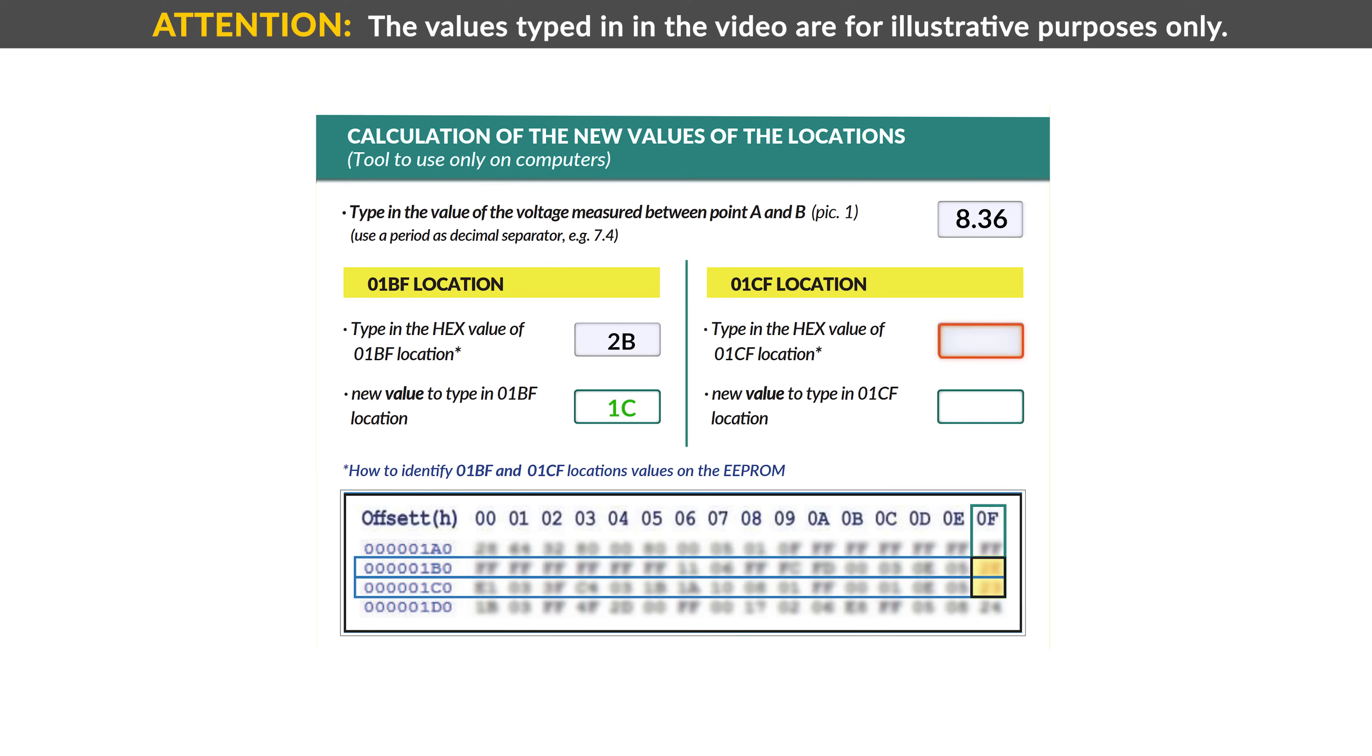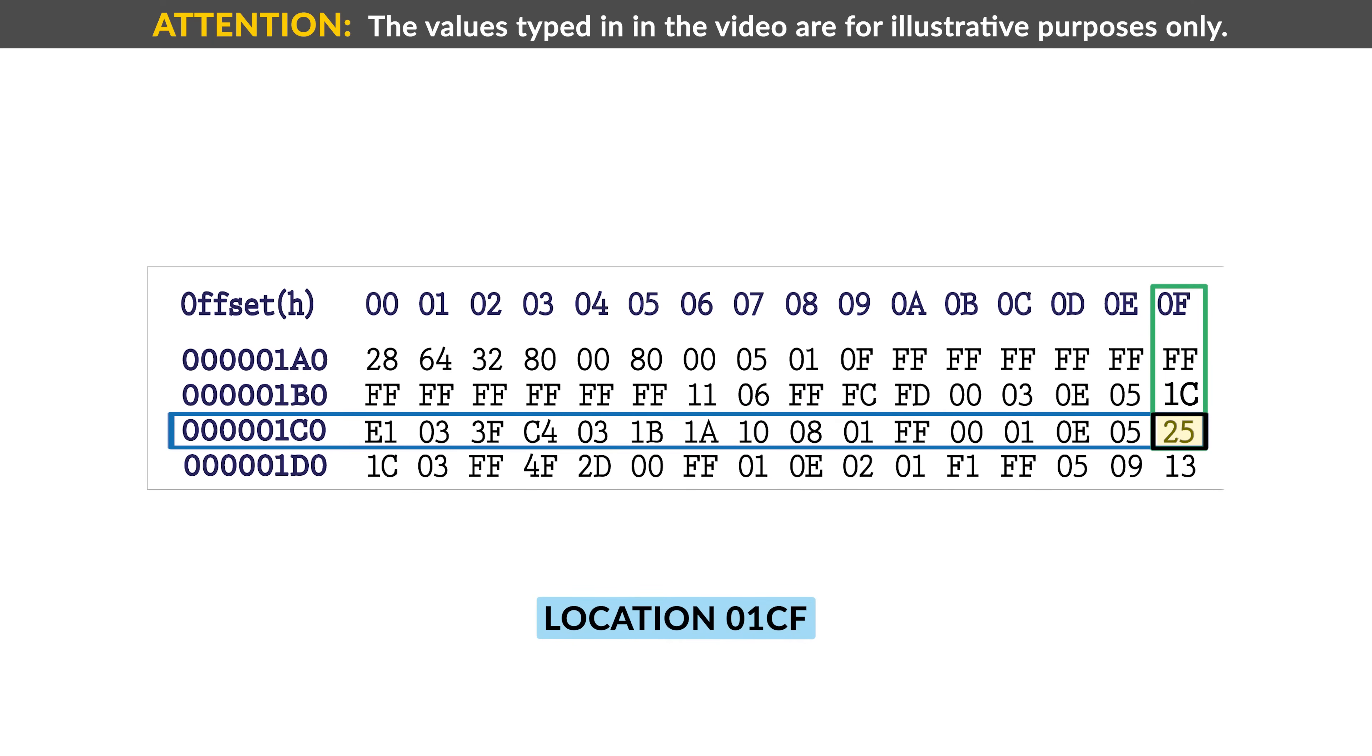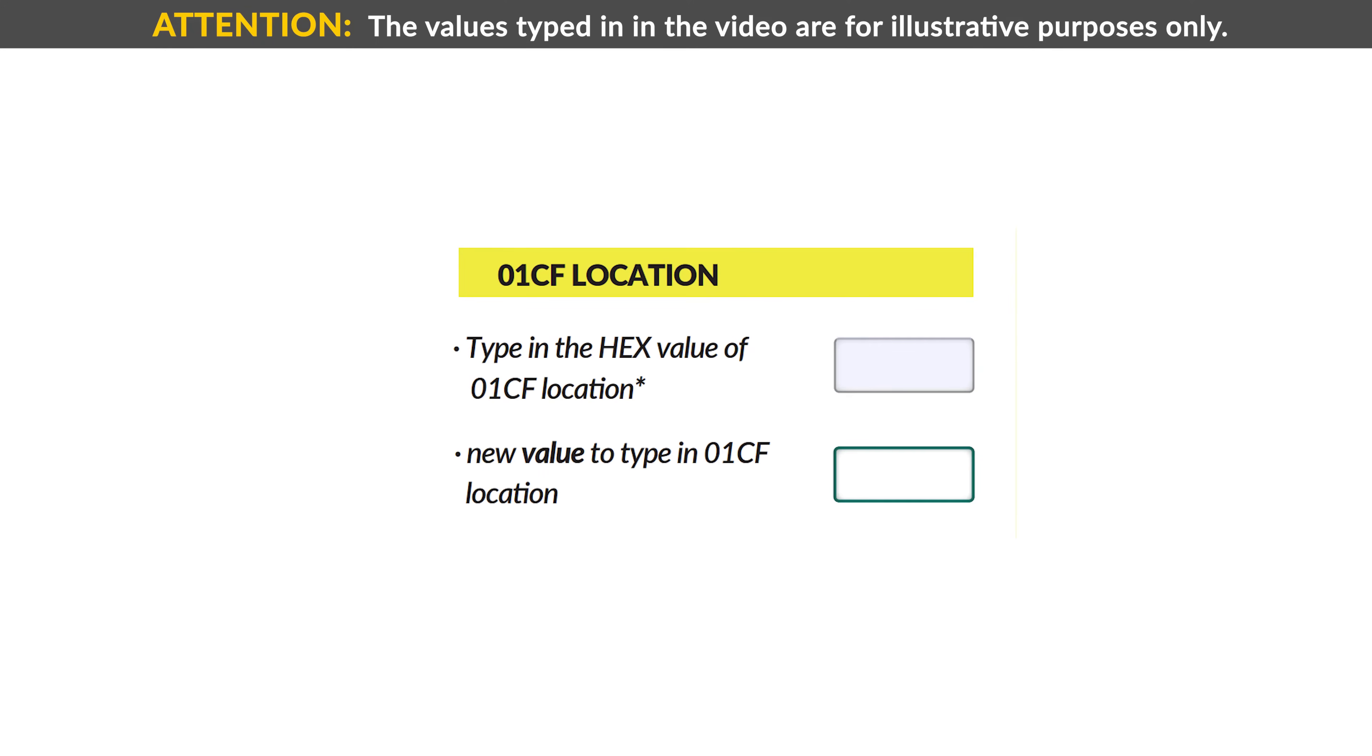Repeat the operation for the location 01CF, typing in its value in the related box, so to get the new value to insert in the location on the EEPROM.